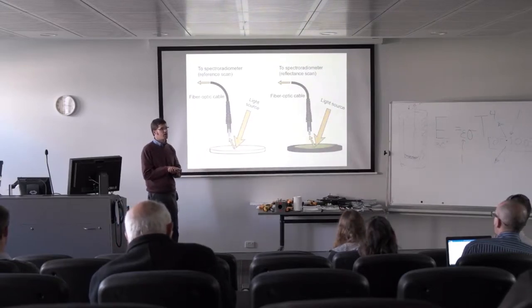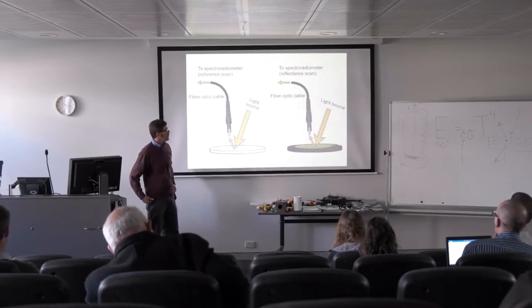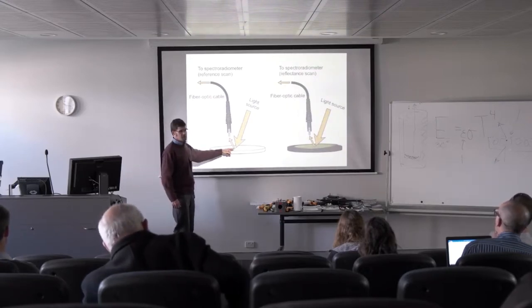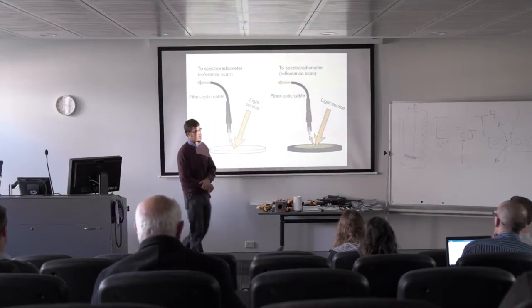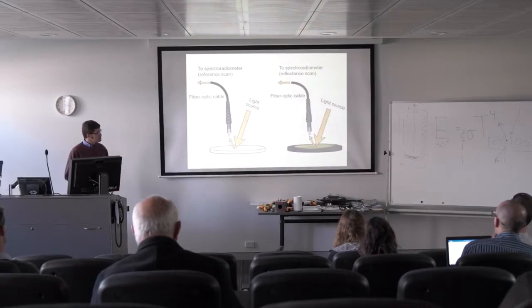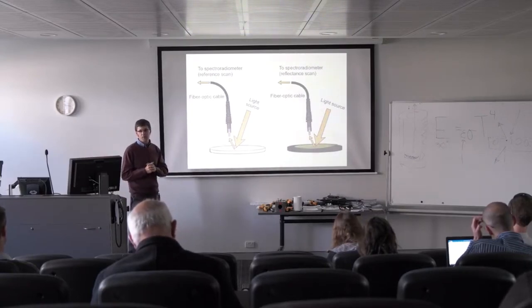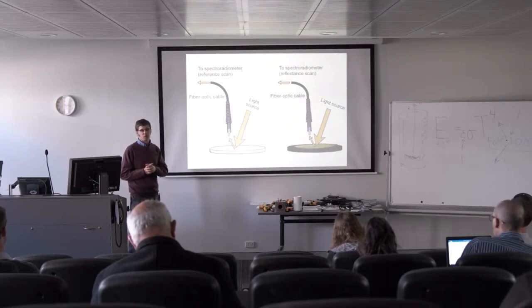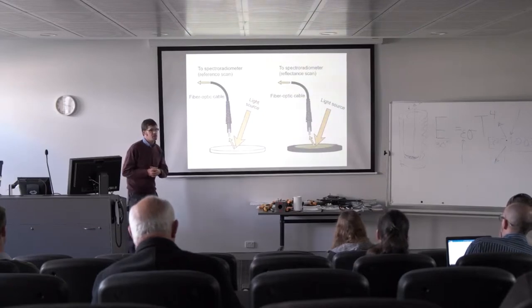When you measure your sample, you put it on top of some kind of flat black background that has a very low reflectivity, so we can assume all the reflection comes from the sample itself, in this case a leaf. This measurement represents the denominator of our equation, and this measurement represents the numerator. This is how you would make a laboratory measurement of a single leaf sample. When we move to the field to do it for a plant canopy, the actual method isn't that much different, and I'll explain it when we get there.